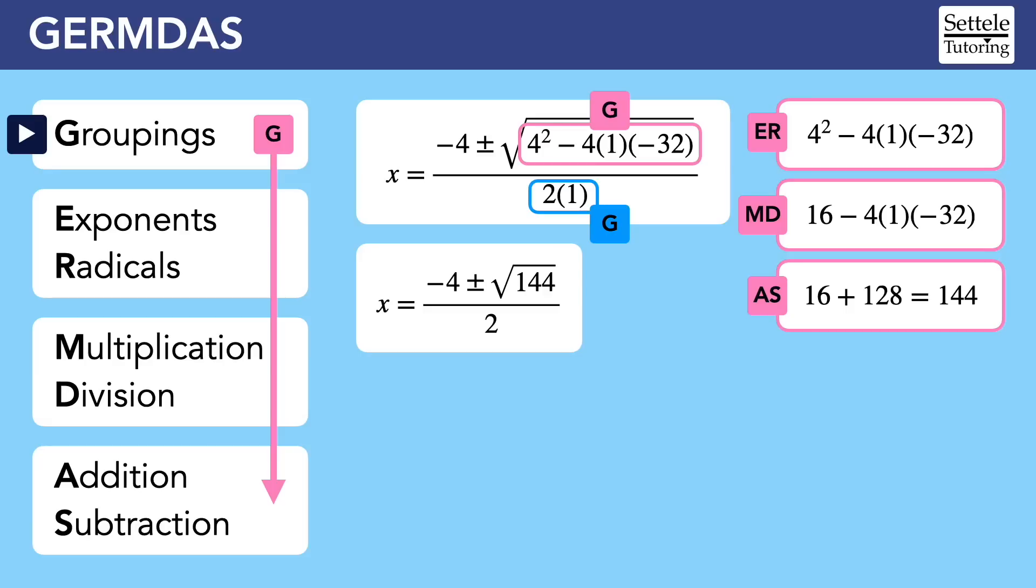If we return to our main GERMDAS, we could move on to exponents and radicals to quickly simplify radical 144 as 12. Our next step would be multiplication and division, so we might be tempted to divide something on the top by 2, but we can't because the top of the fraction is another grouping.